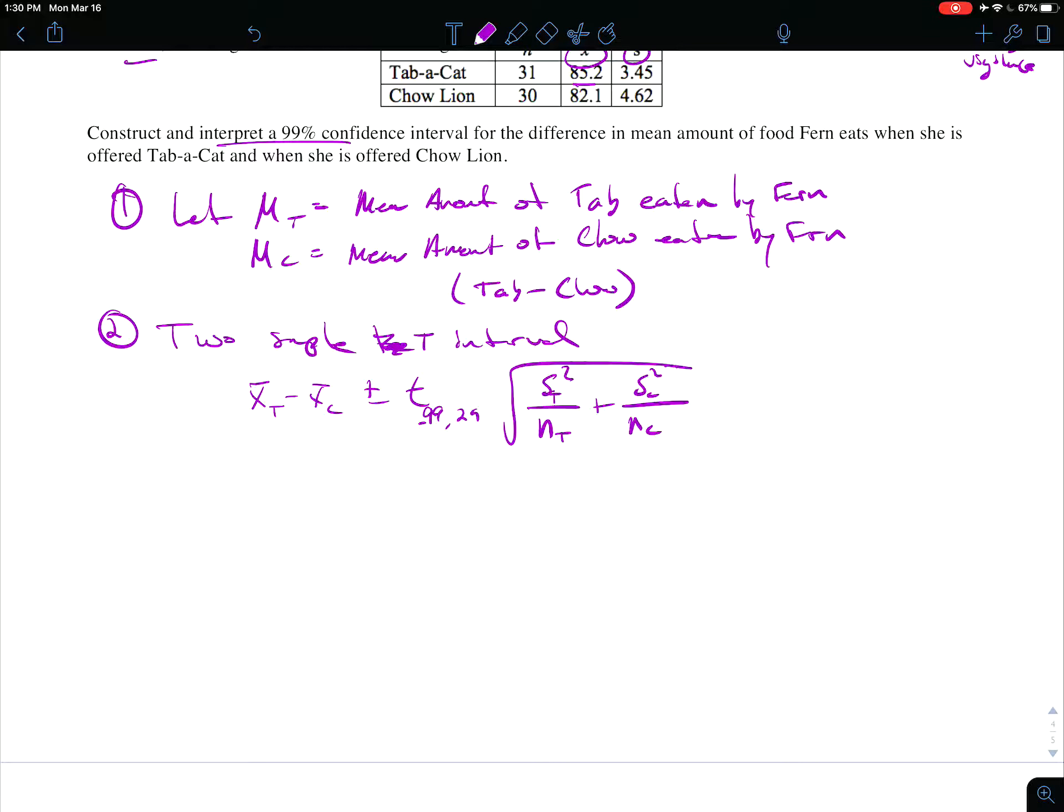Let's see, we've got to check random, independent, and normal. We have the central limit theorem, n's greater than or equal to 30, so we're good there.